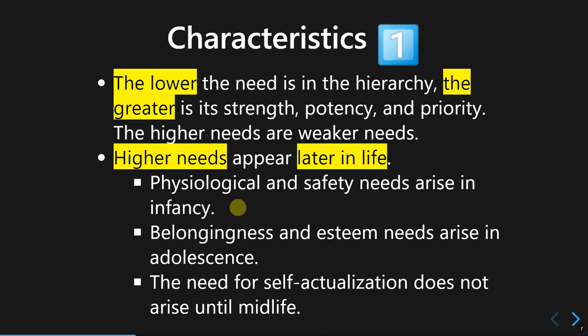In theory, physiological and safety needs arise as early as infancy. We can relate this to Karen Horney, who said basically the same thing — that in the childhood stage, the most prominent need to be fulfilled by parents is the need to be safe. The needs for belongingness, love, and self-esteem arise in adolescence, and self-actualization appears in middle adulthood.